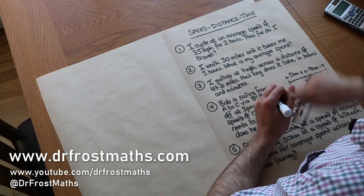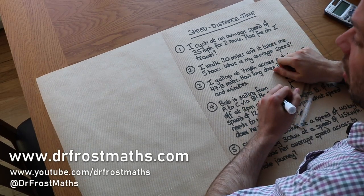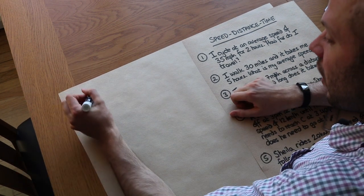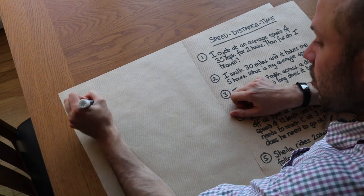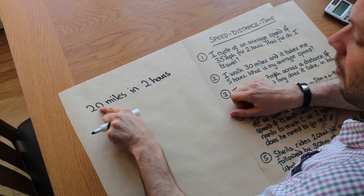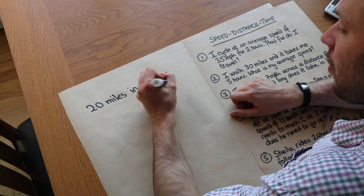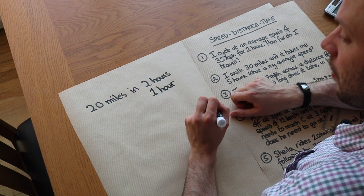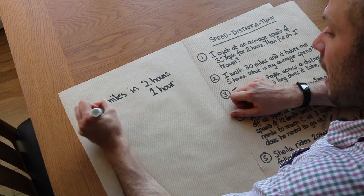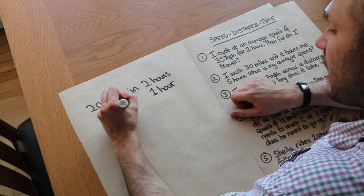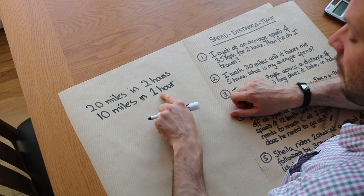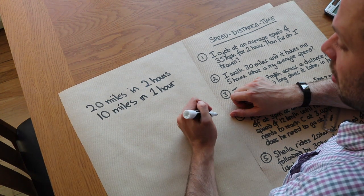Hello and welcome to this Dr Ross maths video on speed, distance and time. Just to give you a simple example, let's say that I travelled 20 miles in two hours. Now if I travelled 20 miles in two hours, how far would I have travelled in each hour? Well, if it was 20 miles in two hours, then I must have done on average 10 miles in each hour. So after one hour I would have gone 10 miles, and then another hour I've gone another 10 miles, getting to 20 miles.